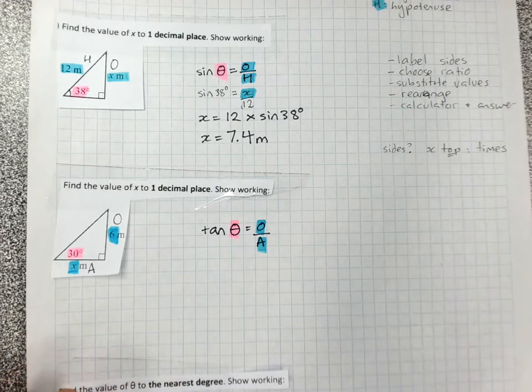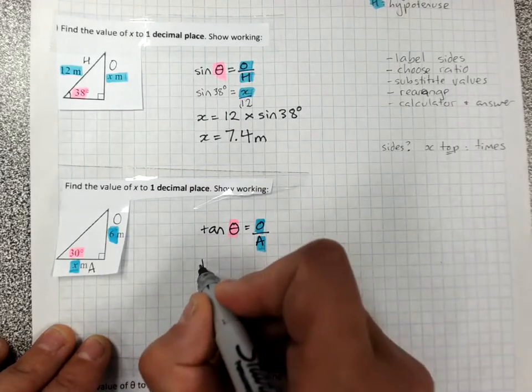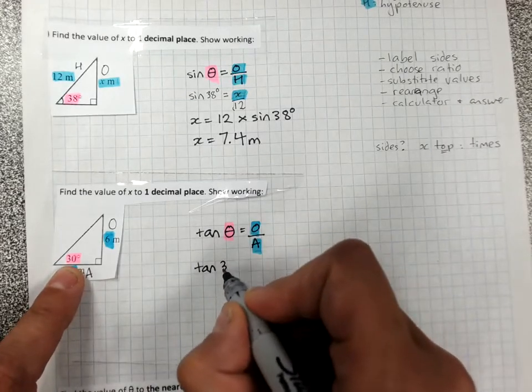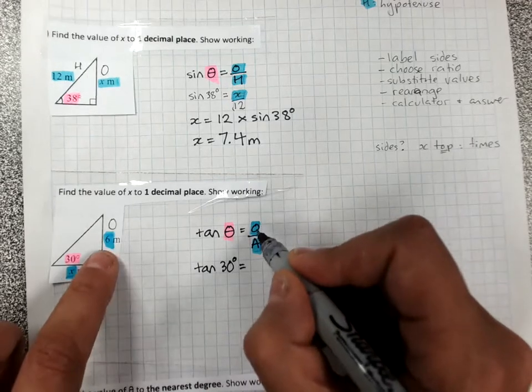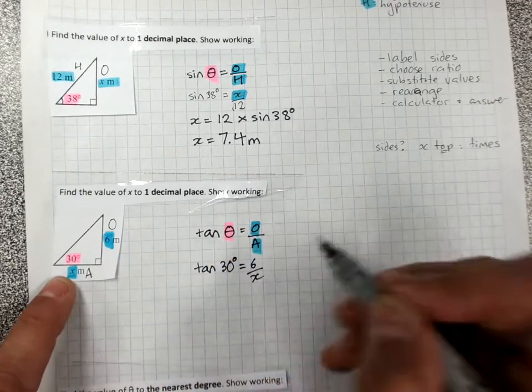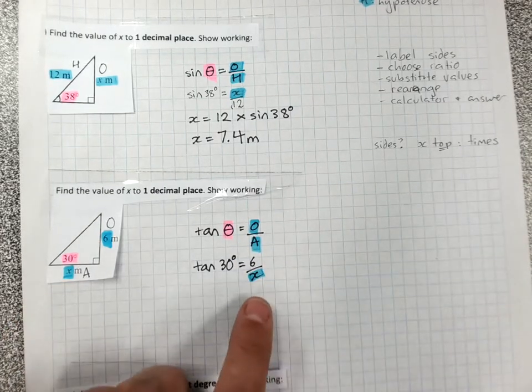Substitute in the values that we know. O. So we write underneath. Tan. Pink angle. Yes, we know an angle. It's 30 degrees. Equals O is 6. A is X. There's the thing that I'm finding. It's X. It's a side.